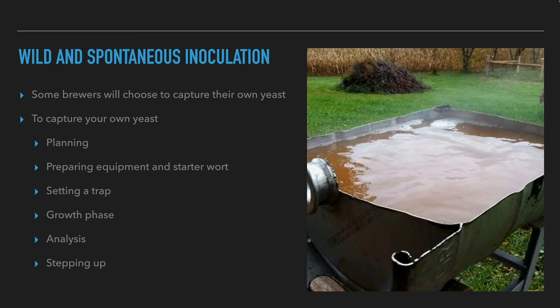After deciding on the time, the brewers prepare the equipment and wort — about 1.5 liters of wort with 2 grams of hops, adjusting pH to about 4.5. This helps prevent bacterial contamination and favors yeast. The wort is placed in a sterilized jar covered with a tetracloth or cheesecloth secured with a rubber band. For good results, several yeast traps are prepared and placed in different locations, preferably near trees, plants, or beehives, in an environment clear of pests. The traps are left outside for about 9 hours.